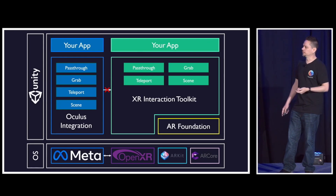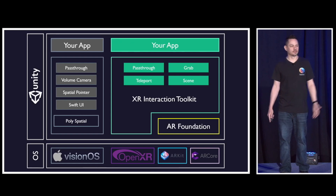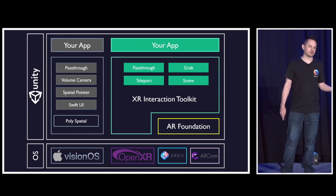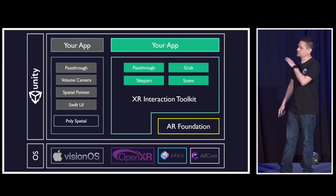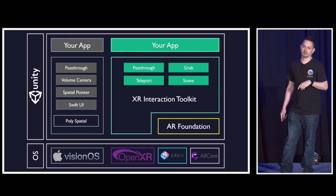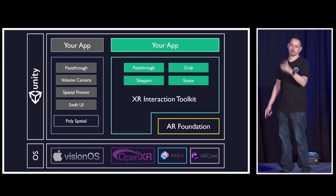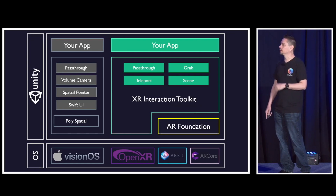Meta's not the only one guilty of doing this — there's also Apple, which has done exactly the same thing. It makes sense: they don't want their device or SDK stuck waiting on a third party. But Apple has done some very different things in their SDK that aren't currently or easily available elsewhere. They've added SwiftUI, and the volume camera is different from what's in XRI, so there are some very interesting things in what Apple is doing.